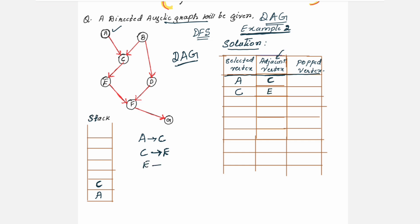Then for E, you just check which are the neighbors. You have only one here: F. For the selected vertex E, the neighbor is F. That F should also be placed in the stack. Then for the adjacent vertex E, the neighbor is F, so F will be placed in the stack.